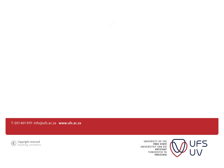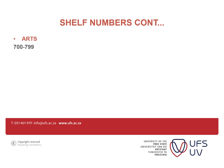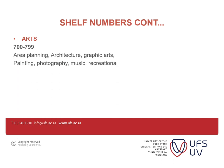Moving on to 700 to 799, which is arts. Under arts we have area planning, architecture, graphic arts, painting, photography, music, and recreational subjects. I'm not going to focus much on this because none of those subjects are offered at the Cocoa Campus.